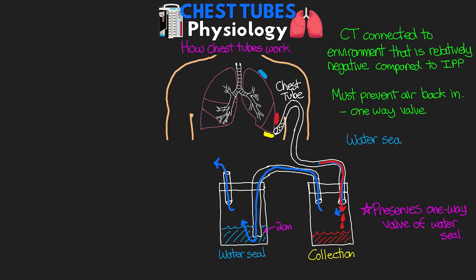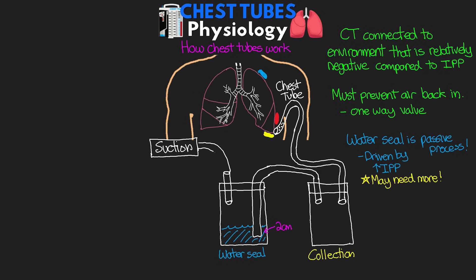It's important to know that this water seal collection is a passive process — driven by the positive intrapleural pressure from the pneumothorax, hemothorax, or pleural effusion. In some cases, patients may have large amounts of air, blood, or fluid, and we may need better drainage. We can use active external suction to help pull air, blood, and fluid out of the pleural space faster. However, we can't just hook up suction directly to the outflow vent of the water seal, because there's a risk of excessive and potentially traumatic suction, which can lead to a hematoma or damage to the lung tissue around the holes at the end of our chest tube.